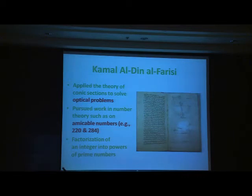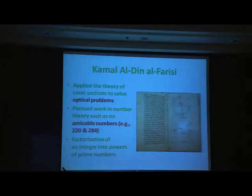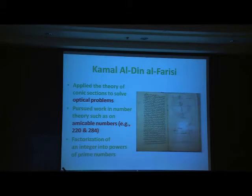Al-Farasi did fantastic work on optical problems and also worked on number theory. He came up with amicable numbers, or friendly numbers. For example, 220 and 284 are friendly numbers because the sum of the proper divisors of 220 equals 284, and the sum of the proper divisors of 284 equals 220. The divisors of 220 are 1, 2, 4, 5, 10, 11, 20, 22, 44, 55, and 110 — add them up and you get 284.